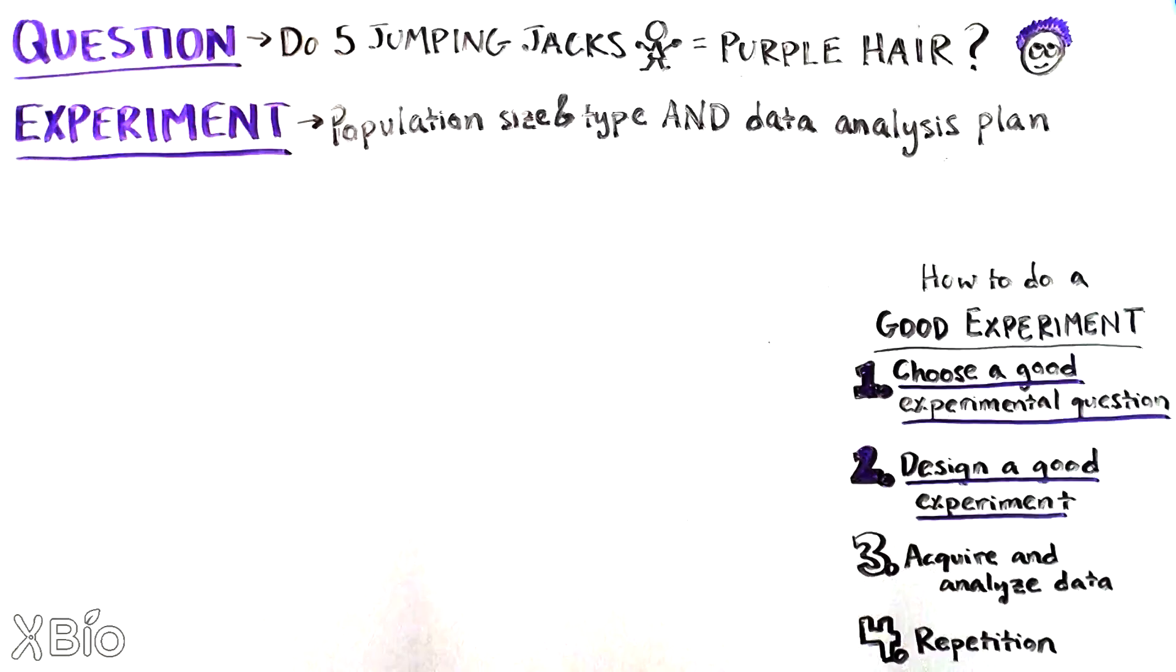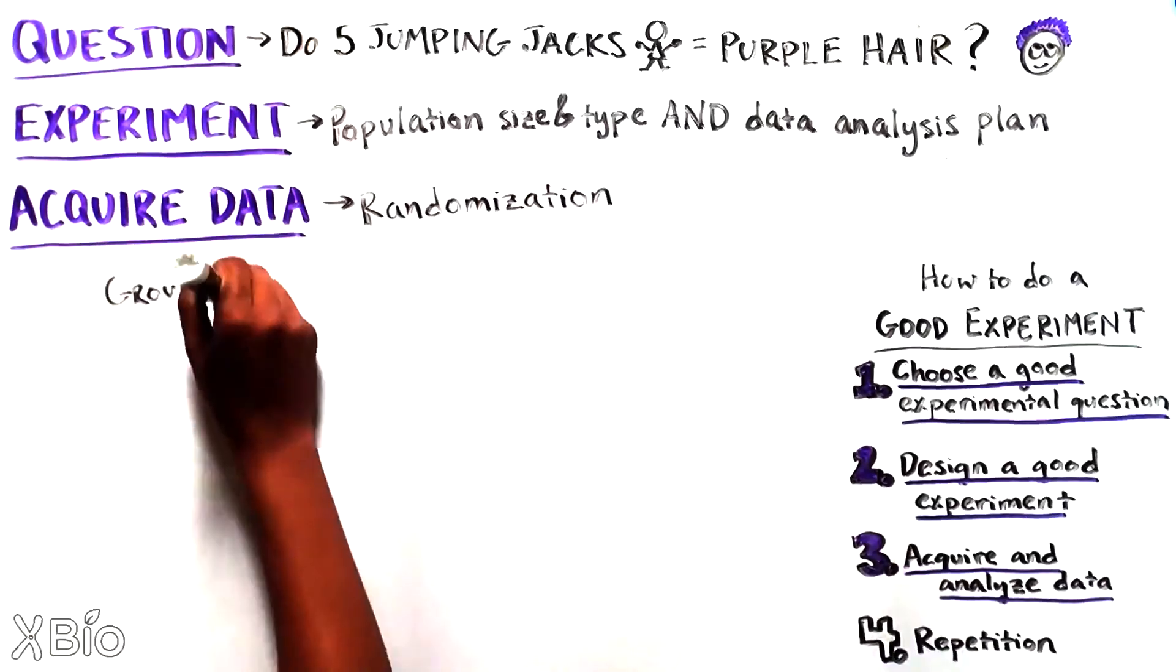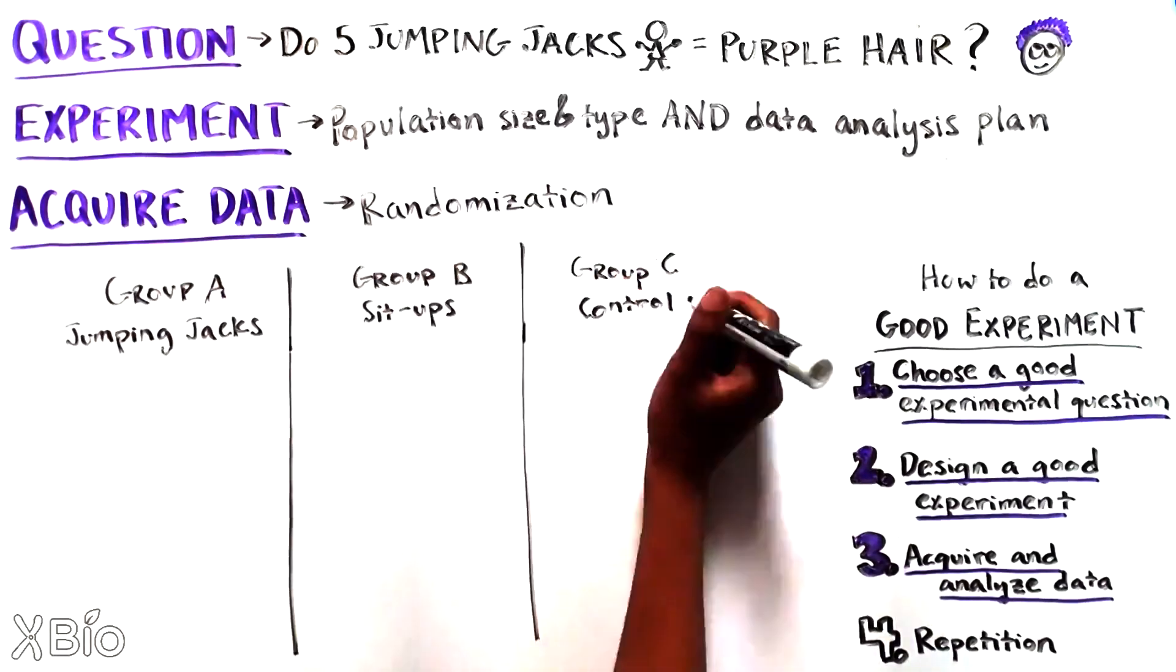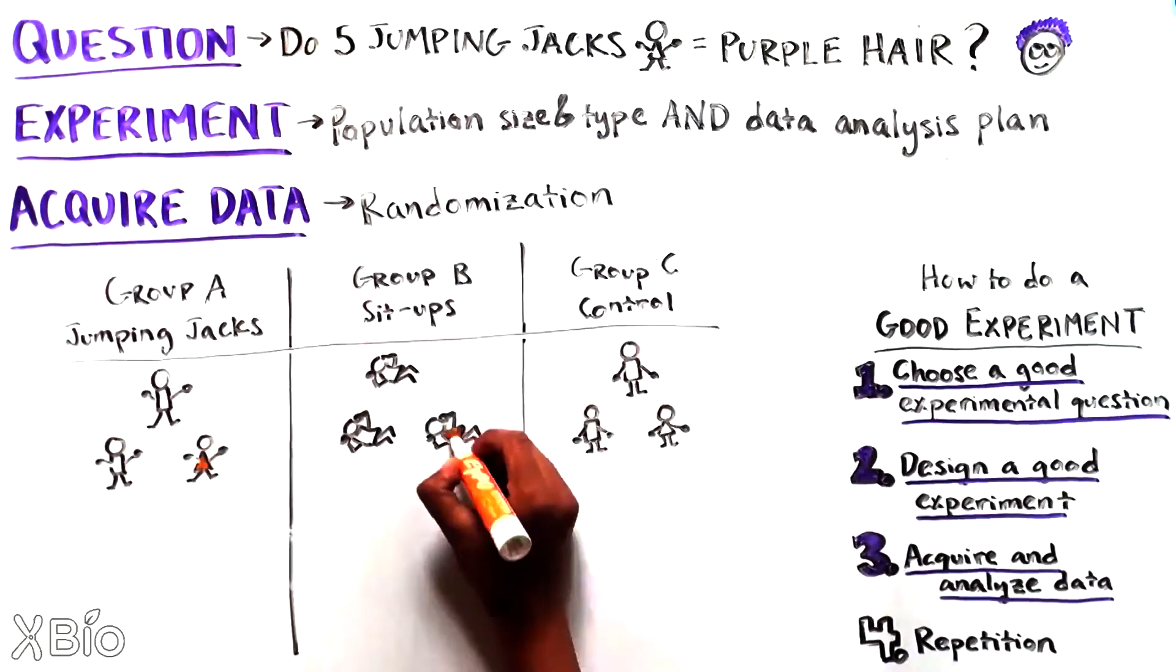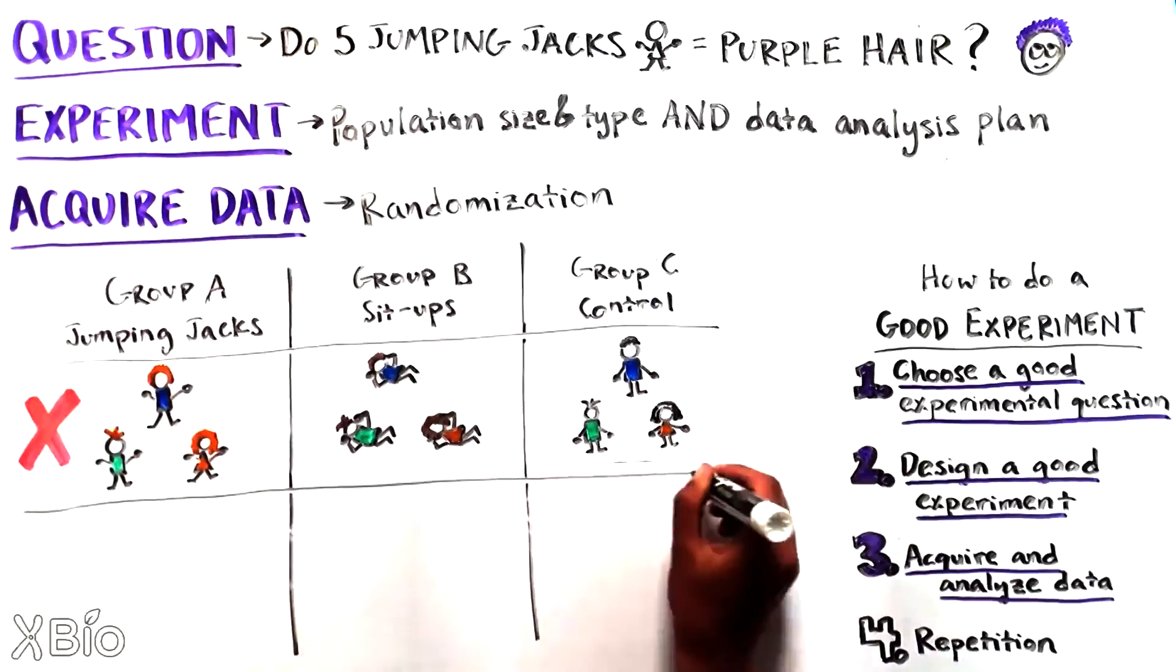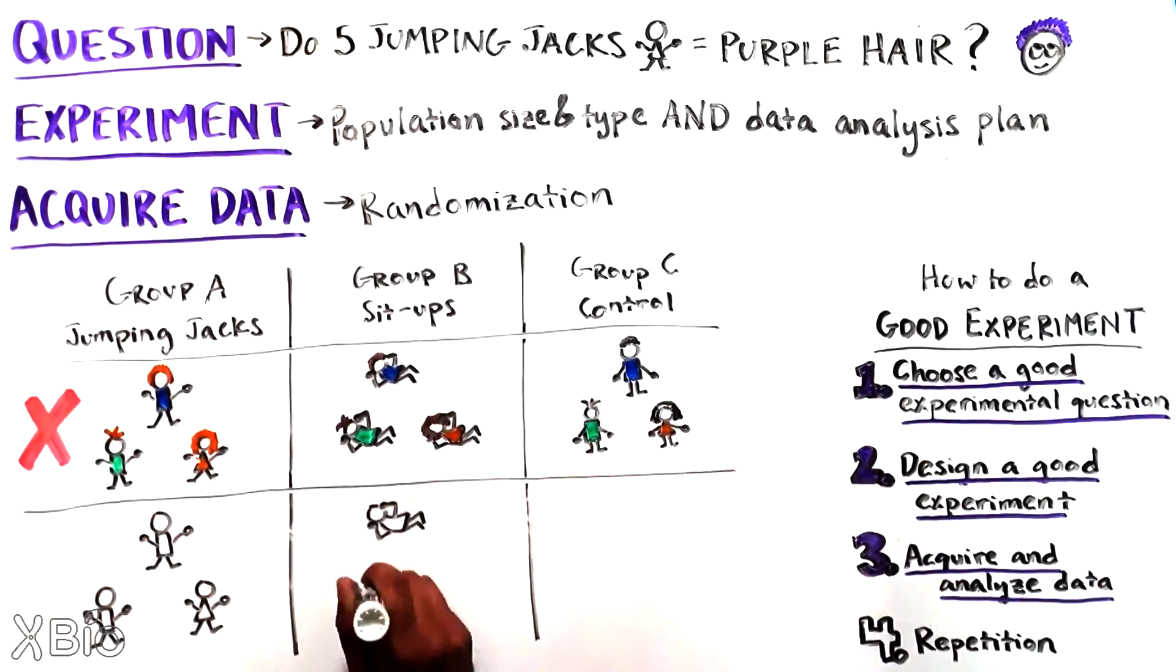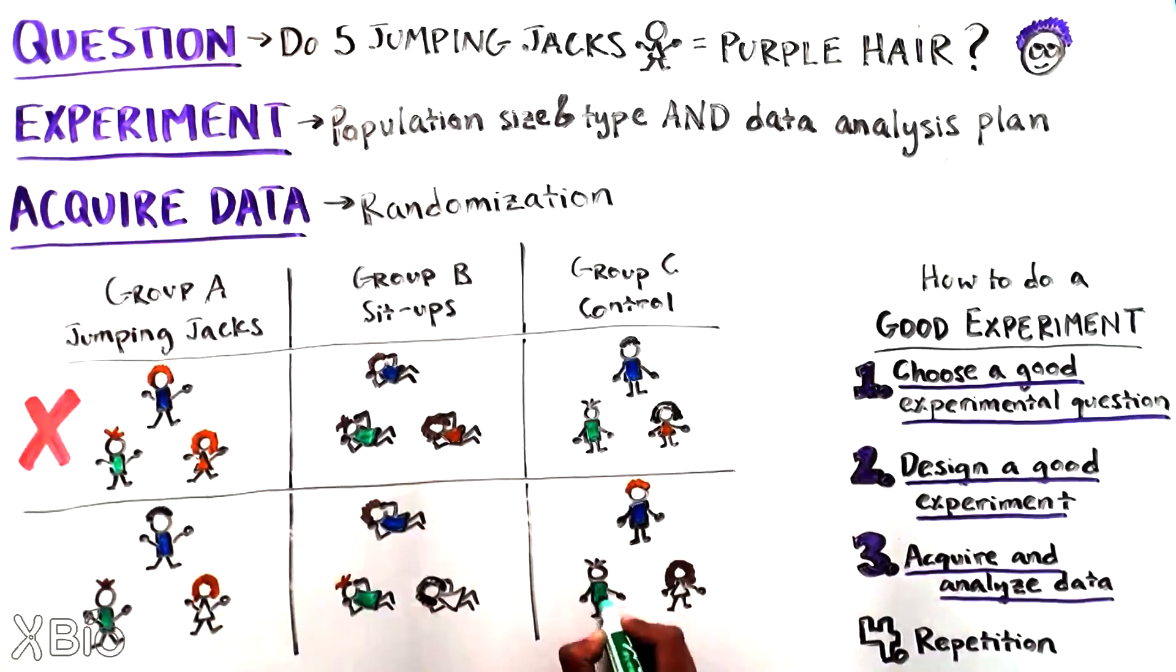There are a few key things to remember while doing the experiment and acquiring the data. The first is randomization. If we put all the blonde people in one group and all the brunettes in the other, any changes we see might be due to differences in hair color at the start of the experiment rather than the exercise. Randomization solves this issue, which means allocating whether someone should be in the test or control group in a random way.